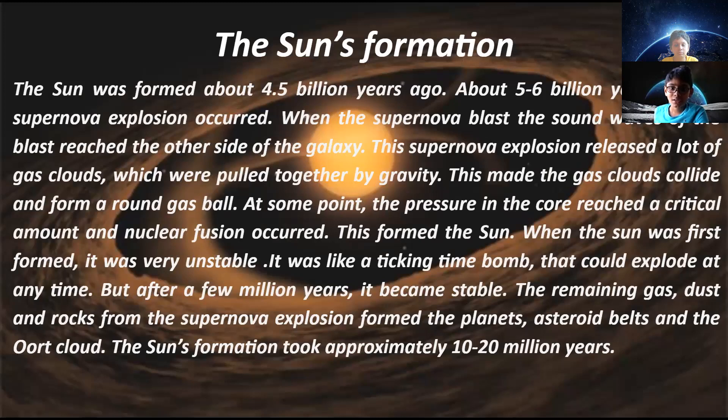At some point, the pressure in the core reached a critical amount and nuclear fusion occurred. This formed the sun. When the sun was first formed, it was very unstable. It was like a ticking time bomb that could explode at any time. But after a few million years, it became stable.